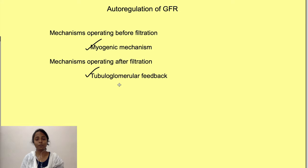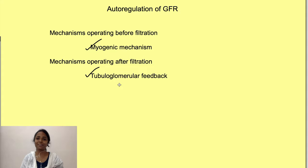So that is the mechanism of autoregulation of GFR: the myogenic mechanism and the tubuloglomerular feedback, which operates via two pathways — adenosine and renin. Thanks for watching. If you liked the video, press the like button, share it, and subscribe to the channel Physiology Open.